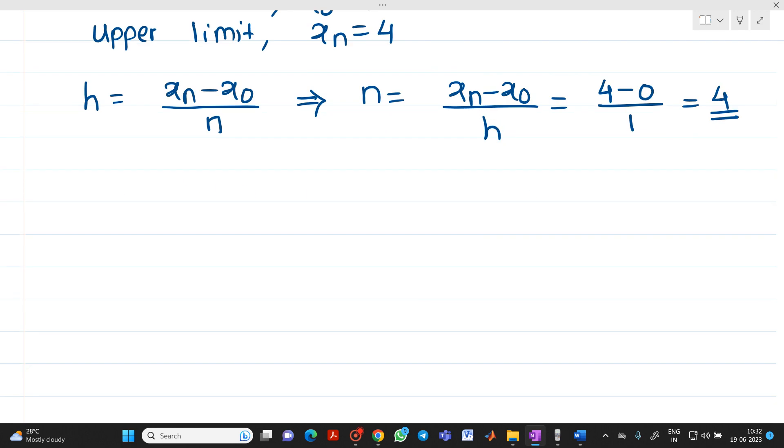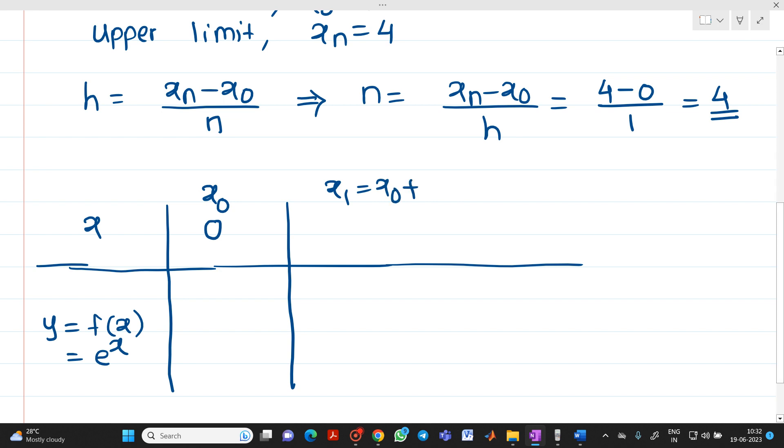Now we will tabulate from the given function. This will be your x values. Here y will be f of x which is e raised to x. As the lower limit starts from 0 and ends at 4, we take the first value as 0 which will be x0. The second value, x1 will be equal to x0 plus h, which is 0 plus 1 equal to 1.